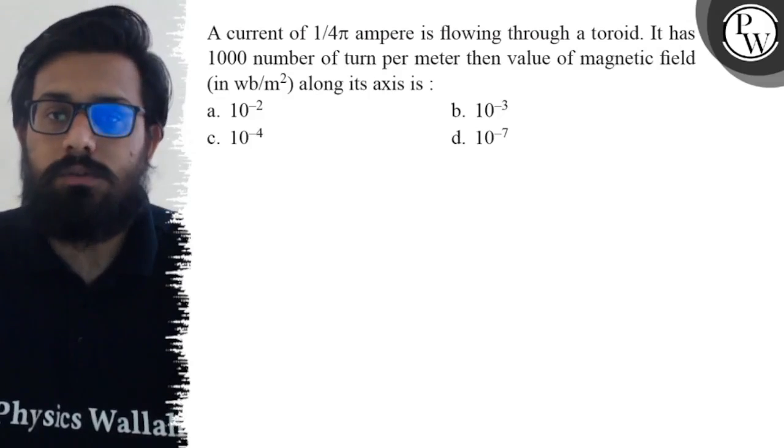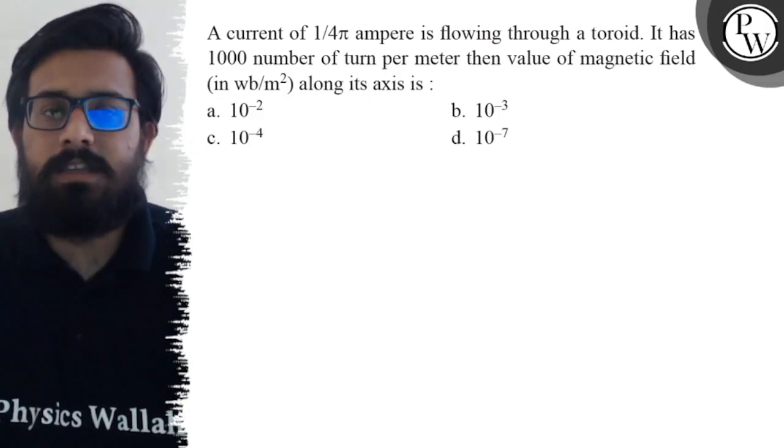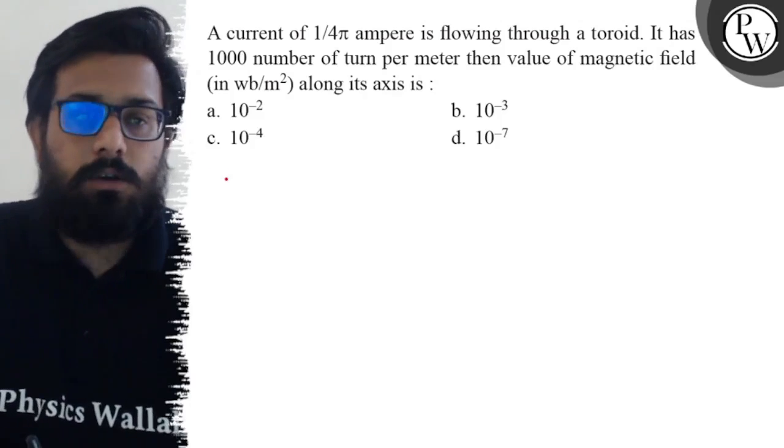Your first option is 10 raised to power minus 2, second option is 10 raised to power minus 3, your third option is 10 raised to power minus 4, and your fourth option is 10 raised to power minus 7.